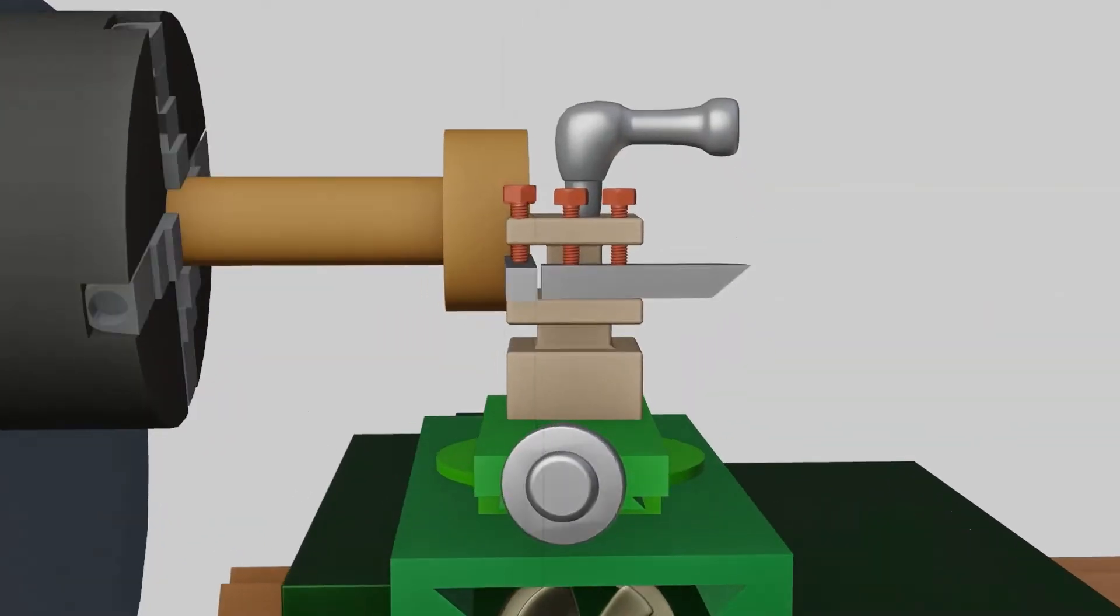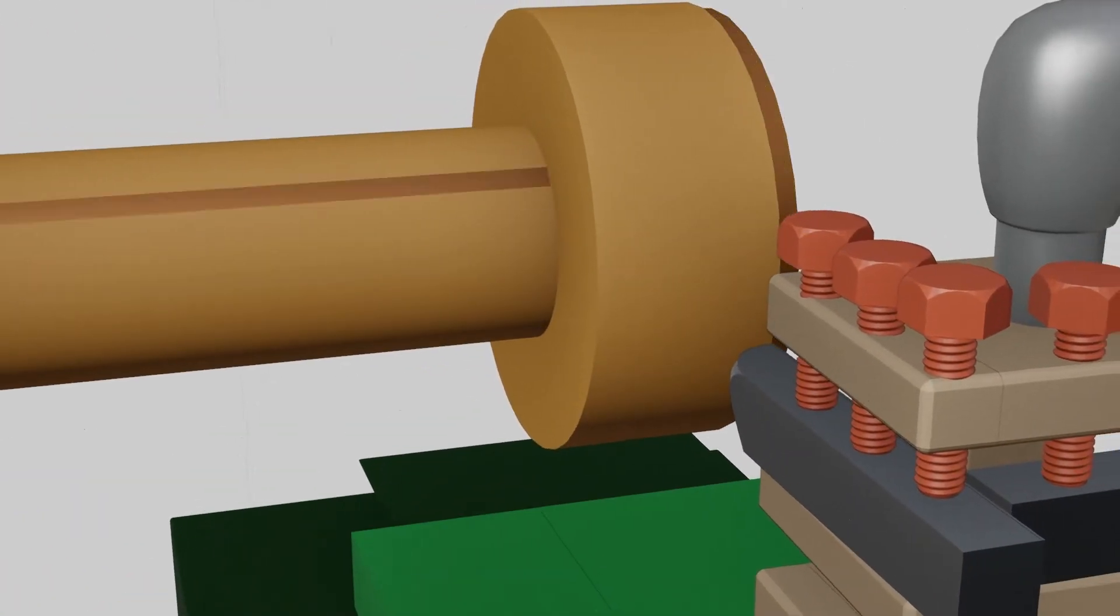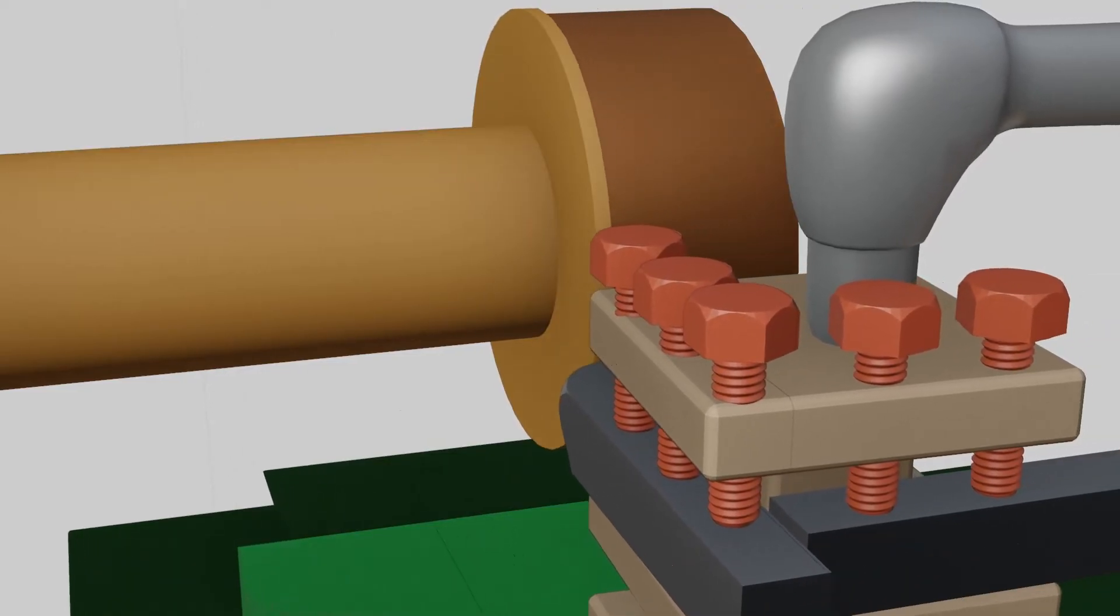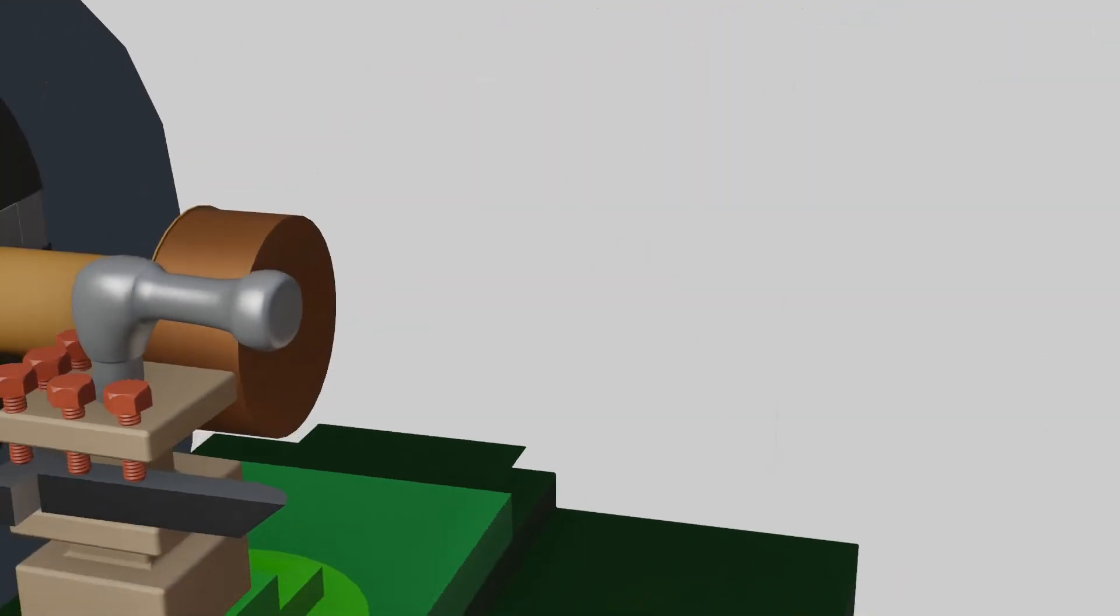In lathe operation, workpiece rotates and tool moves front and back. Spindle gives rotation to workpiece.